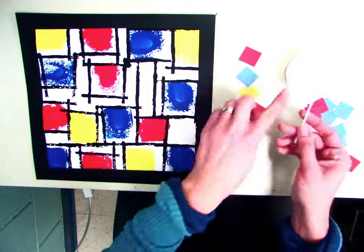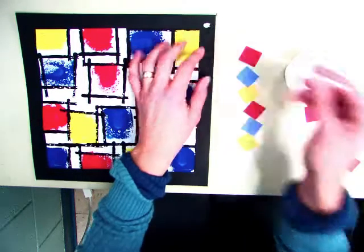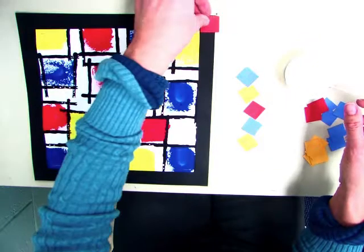So today at your table you have a Q-tip, some glue, and little squares. You're just going to take a tiny dot of glue, and then you're going to stick your tile to it.